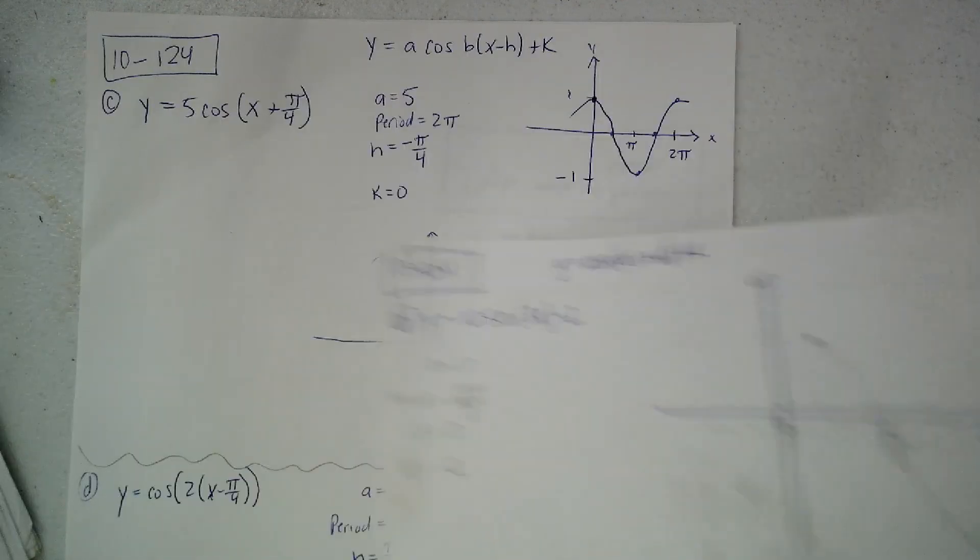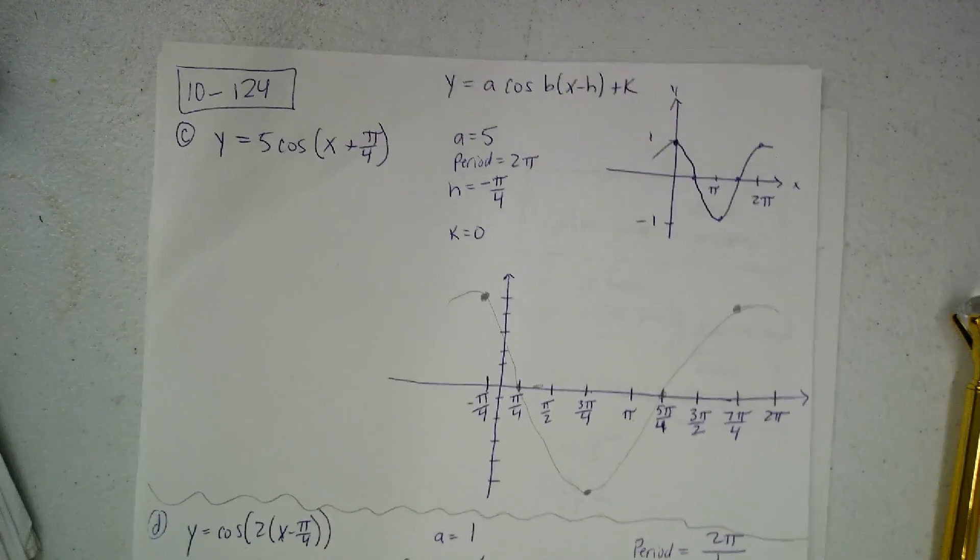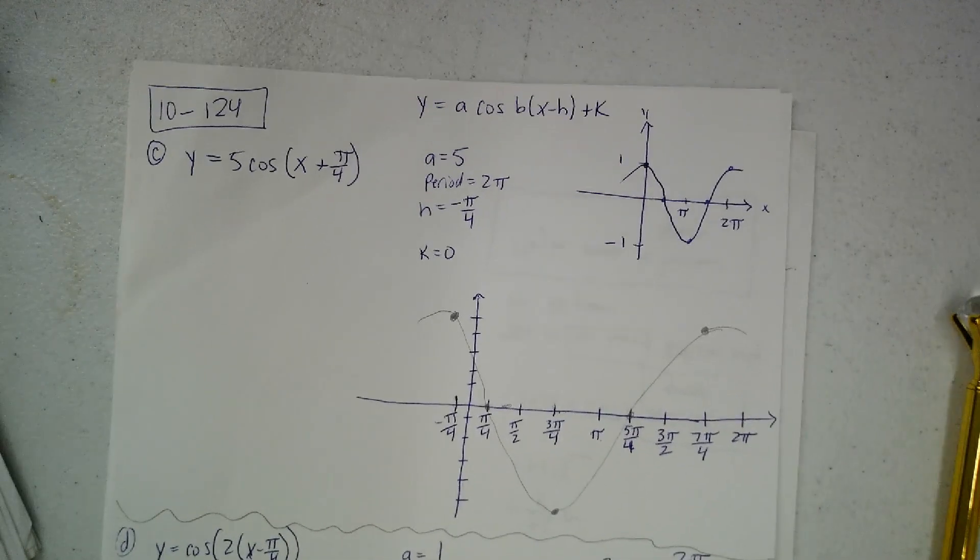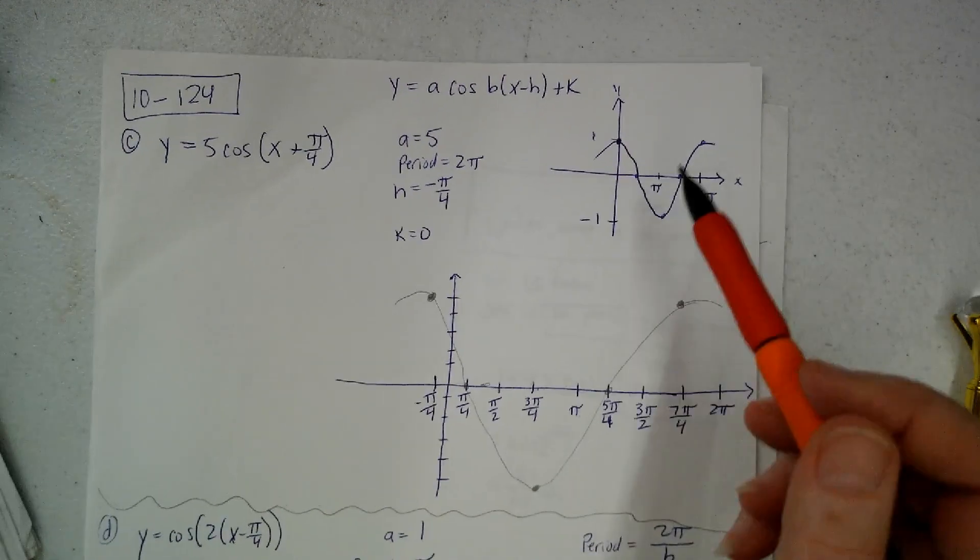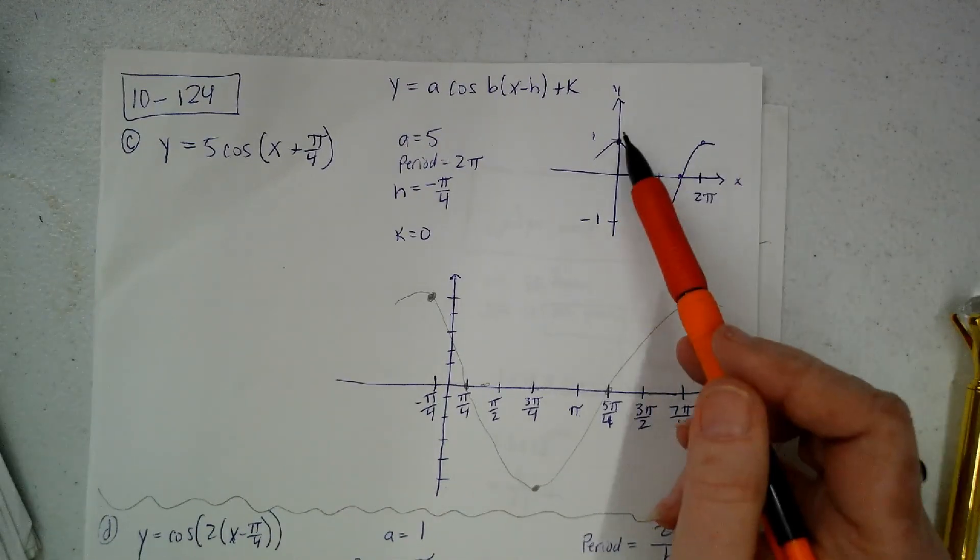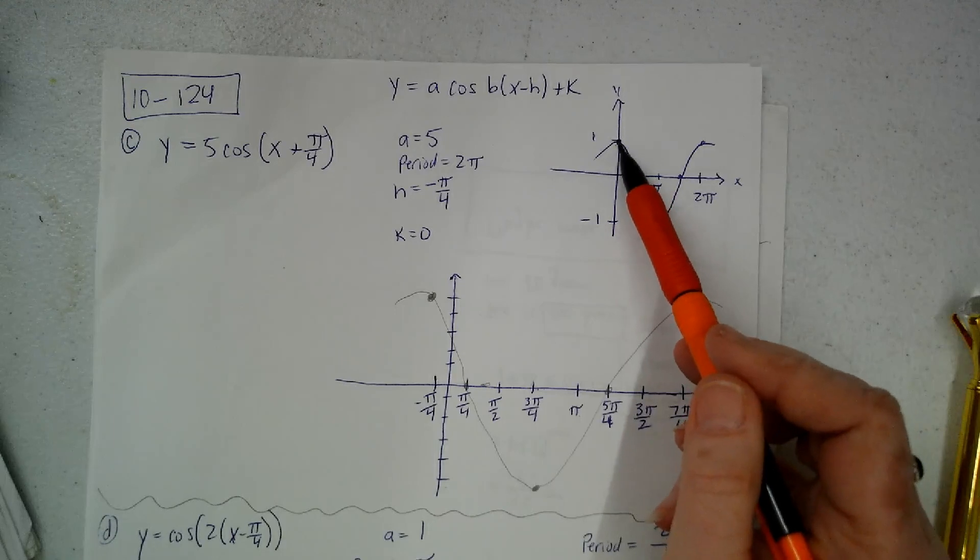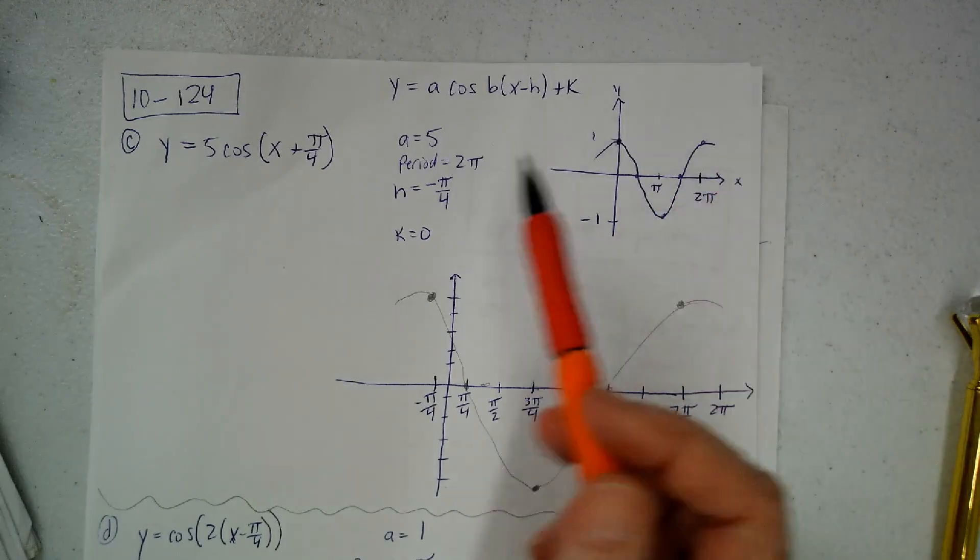5 times cosine x plus π over 4. So cosine graph looks like this. So I'm going to start here and end here. And I'll figure it out. So I look for A. A is 5.